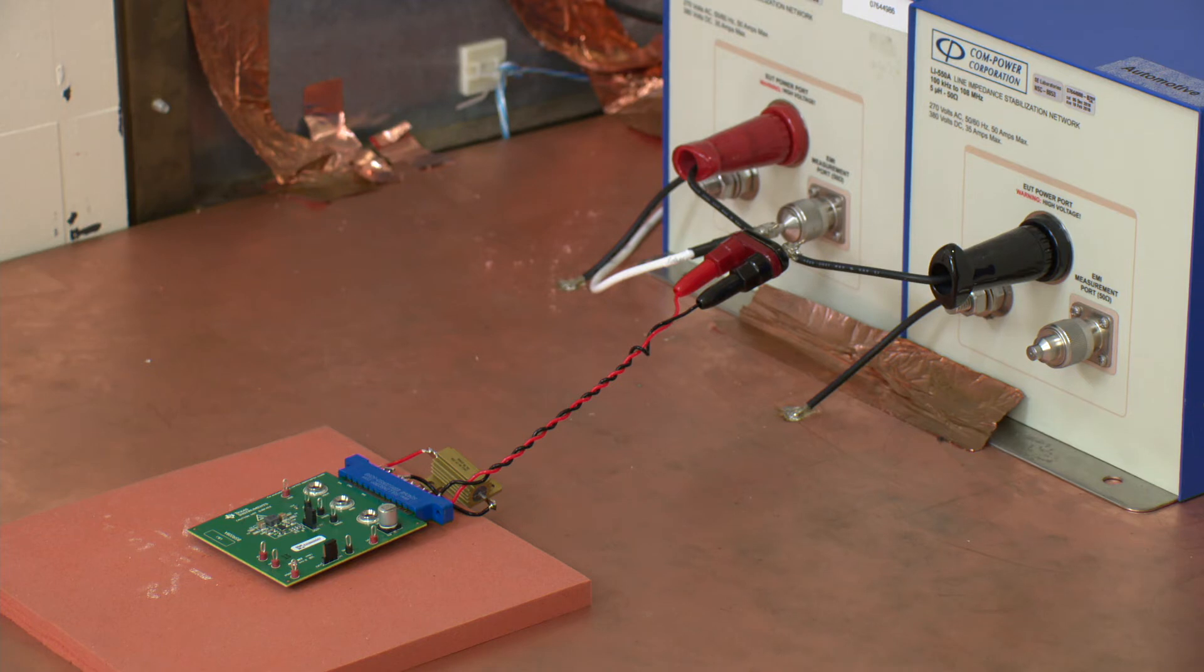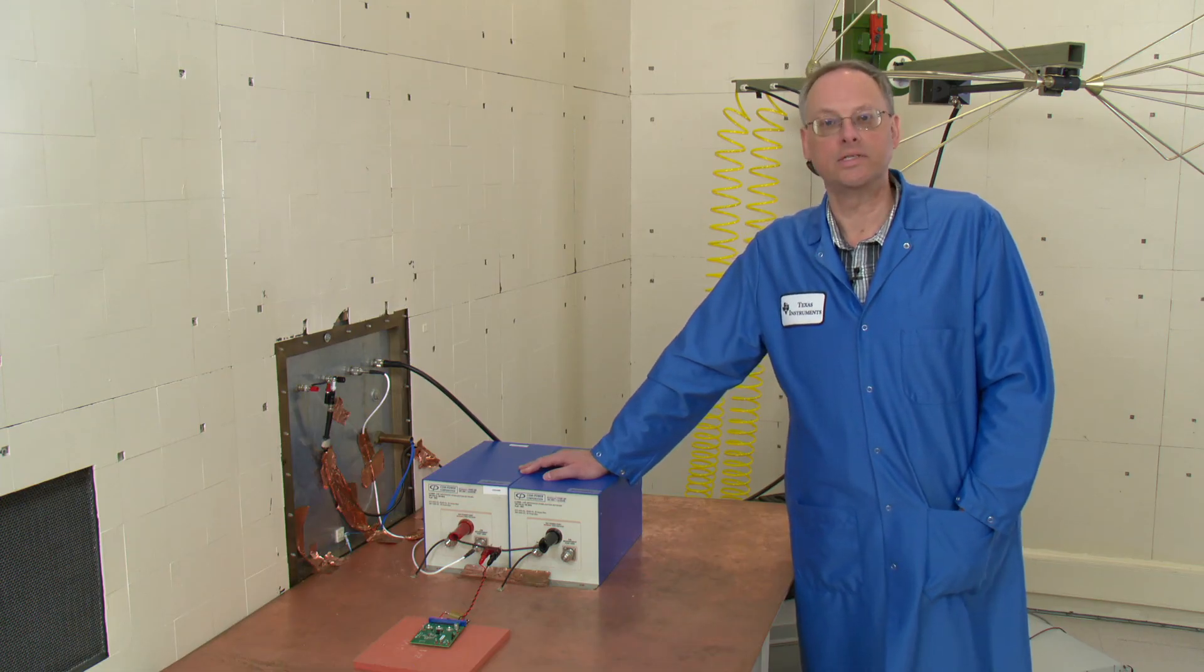As you can also see, our DUT is separated exactly 200 millimeters away from the input to LISN, which is part of the specification. And our load resistor is connected very close to the DUT, so any noise generated in that resistor will not be counted and included in the scan. So let's go back in the lab and run the scan.